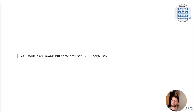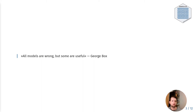All models are wrong, but some are useful — so goes the quote by statistician George Box. Any model is but a simplification of reality and must always omit details. No model can depict the complete underlying reality. However, models are useful, and to understand what they're useful for we must first look at the different types of models.